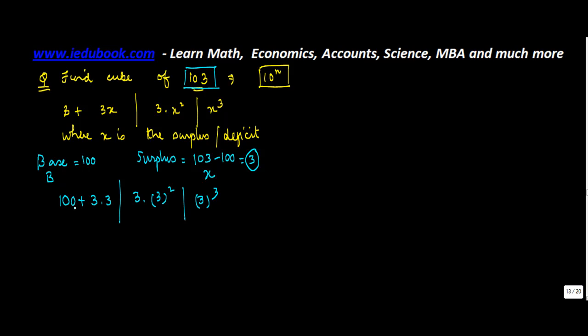So this will give you 3 into 3, 9 plus 100 will give you 109. 3 into 3 square - 3 square is 9. 9 into 3 gives you 27. And 3 cube will give you 27.